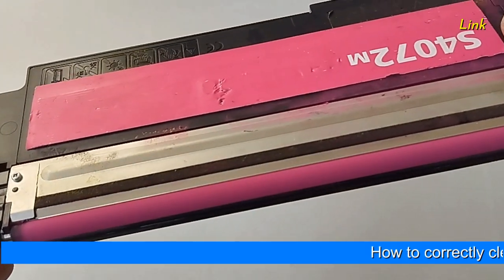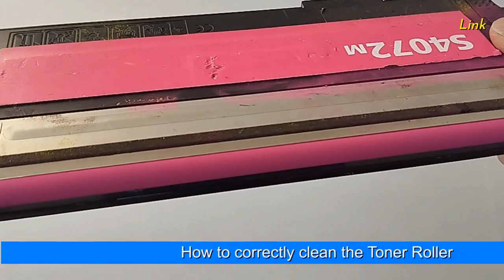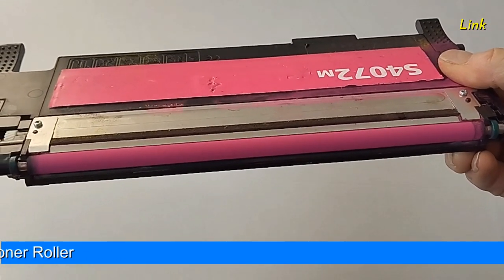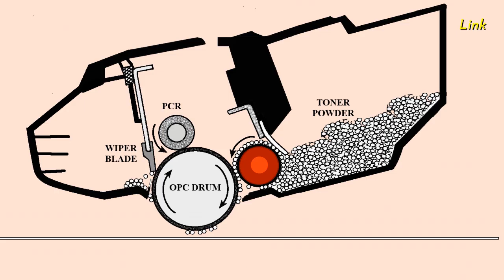The toner roller, or developer roller, or sometimes the magnetic roller, is simply the toner-coated roller that is in contact with the drum. It brings the toner powder to the drum.